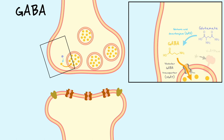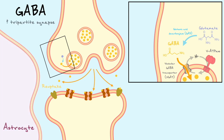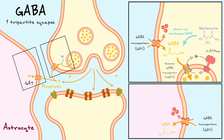VGAT uses the gradient of protons generated by V-ATPase to import GABA inside the vesicles. After action potential propagation and calcium-mediated exocytosis, the GABA molecules are released into the cleft and interact with postsynaptic receptors. To remove GABA from the synaptic cleft, inhibitory synapses also form tripartite synapses with astrocytes, which have particular GABA transporters named GAT that co-transport GABA with sodium inside.